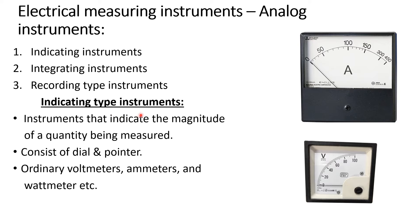First, let us discuss about indicating instruments. From the name 'indicating,' it is clear that these are instruments which indicate the quantity or the magnitude of the quantity being measured. An indicating instrument consists of a dial and a pointer. Here you can see an analog ammeter that consists of a pointer and dial.